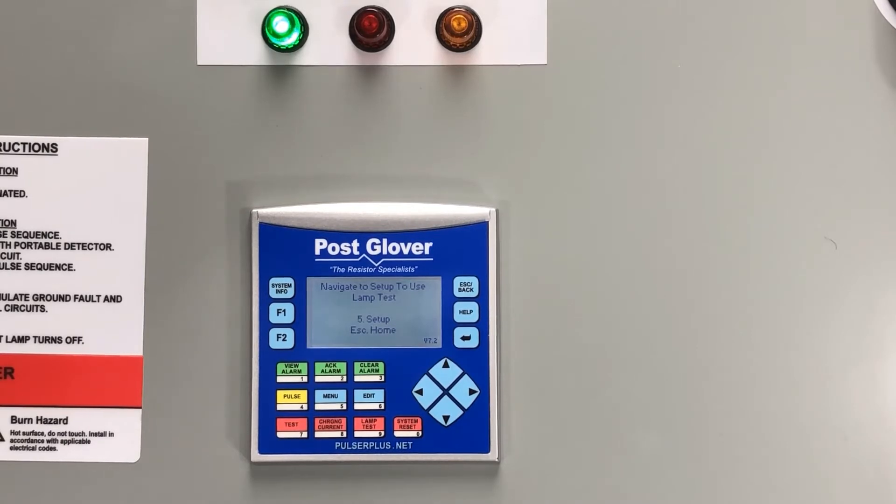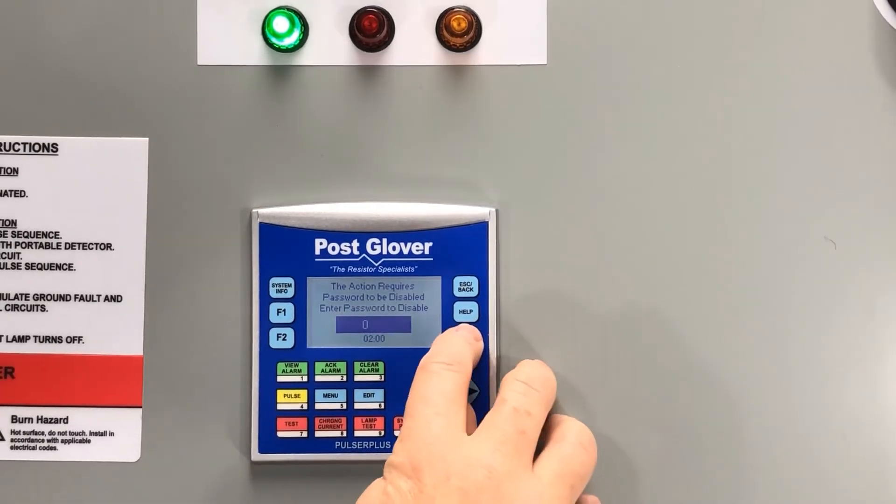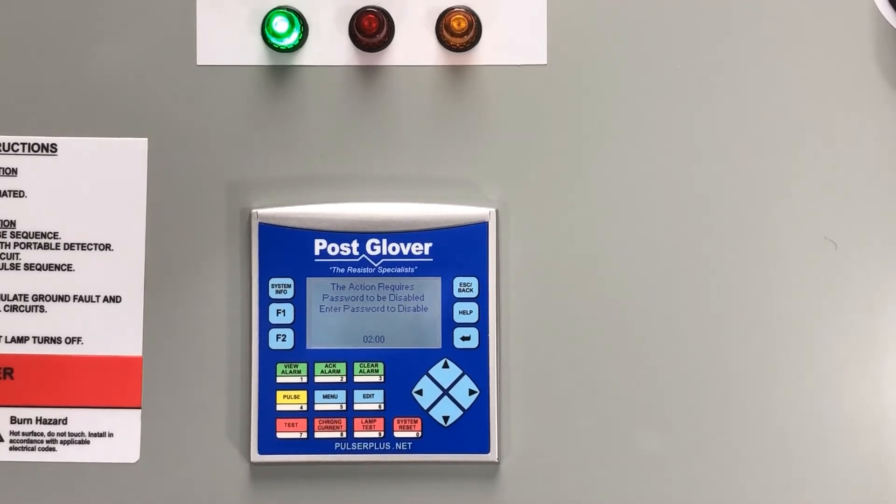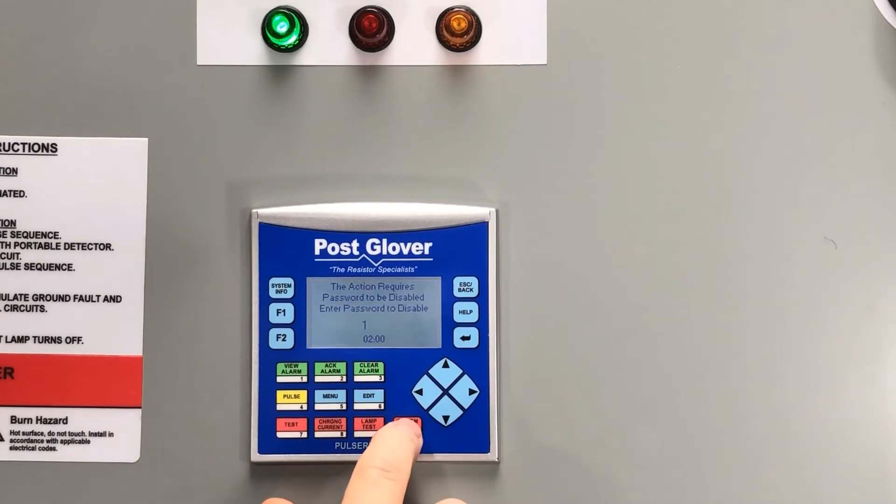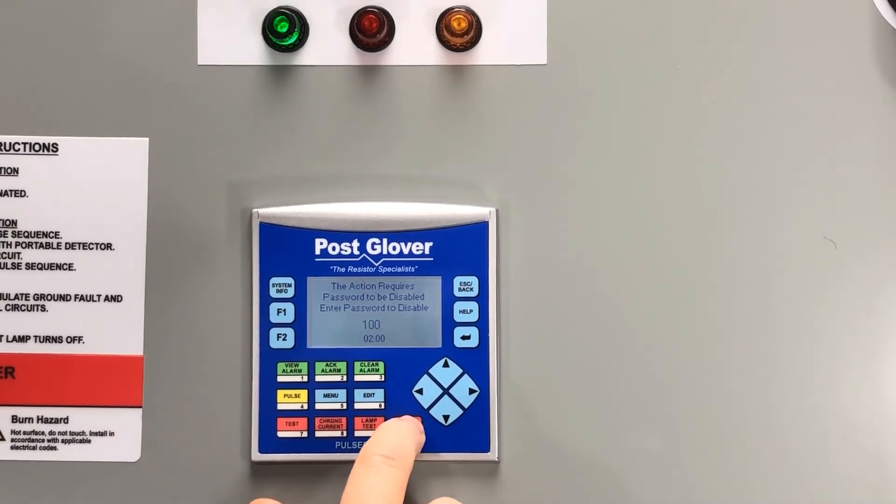Now you can press the number 5 button, which is the setup menu button. It will then tell you to enter password, so you need to press the enter button. Then you need to type in the password, which by default is 1000. Then press the enter key to accept your choice.